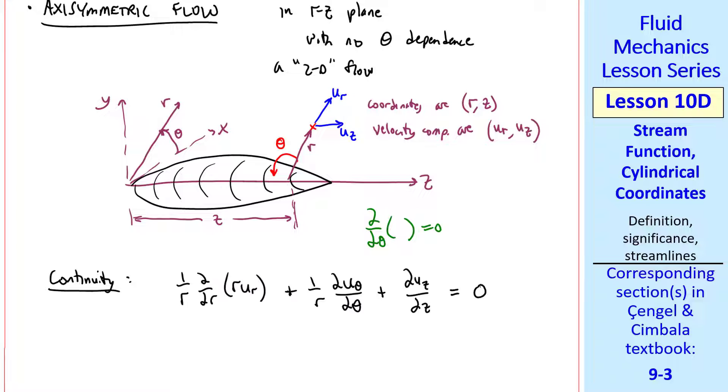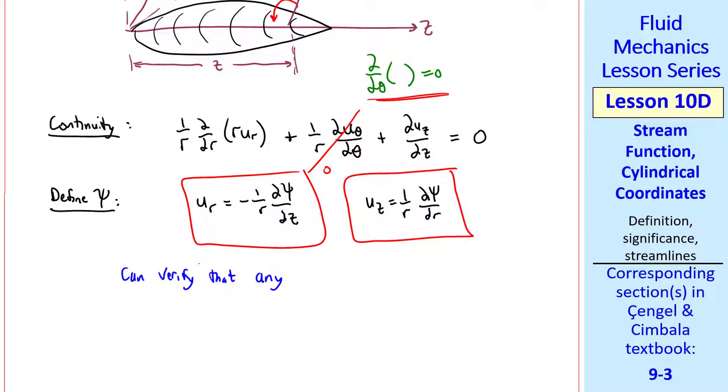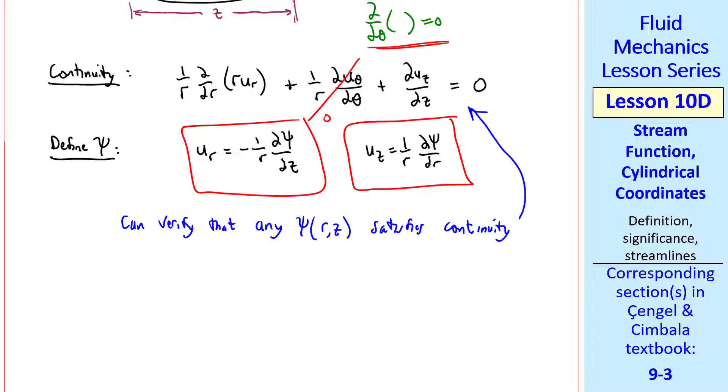Again, let's write the continuity equation, the same one we had previously, but now it's this term that goes away, since nothing depends on theta. Now we define psi, again, by its derivatives. A common way to do this is U_R is minus 1 over R del psi del Z, and U_Z is 1 over R del psi del R. Again, we can plug these into the continuity equation to verify that any psi as a function of R and Z satisfies this continuity equation. I'll let that as an exercise for the viewer.